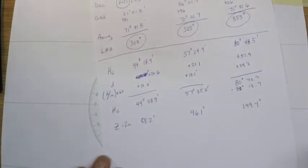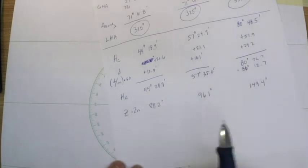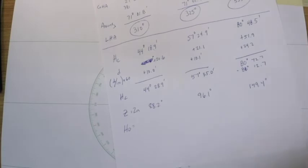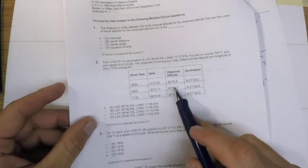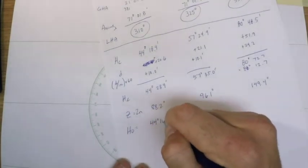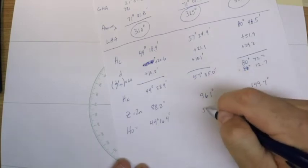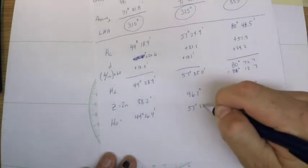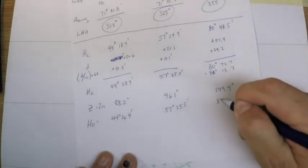So the very last step is to compare my computed height to my observed height. In the problem the observed altitudes were given for each sighting, so I can just reproduce those here. The observed height was 44 degrees 16.4 for this one, it was 57 degrees and 25.5 minutes for the second one, and for the third one it was 81 degrees 30.2.